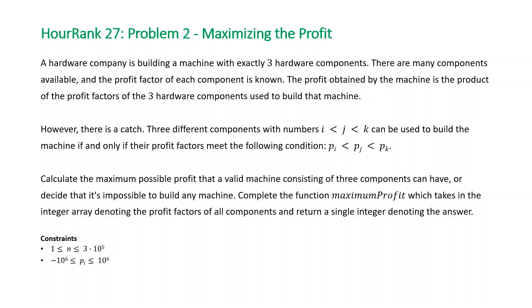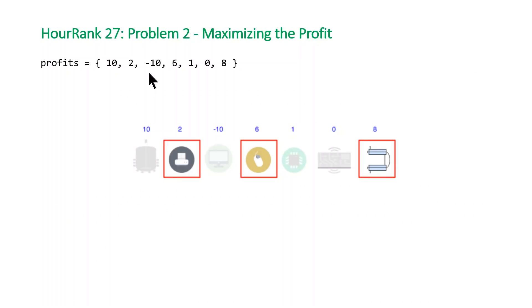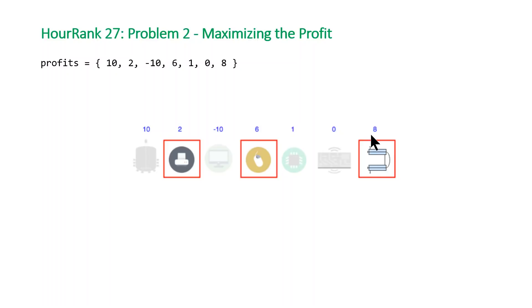Let's take a look at the example that HackerRank provided. We have one negative number and the rest are positive numbers. HackerRank tells us the solution is taking components with profit factors 2, 6, and 8, combining those to get an answer of 96. A valid machine is any set of components that when combined have their profits in strictly increasing order. So 2, 6, 8 is strictly increasing; negative 10, 1, and 8 is also strictly increasing, but multiplying those gives negative 80, which is not greater than 96. Note that combining components with profit factors 10, 2, and negative 10 isn't valid because that's in decreasing order.